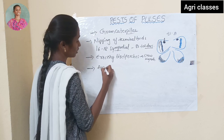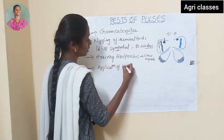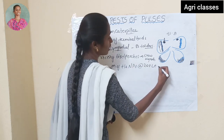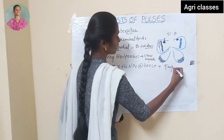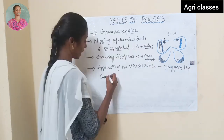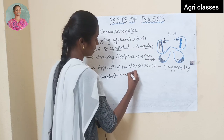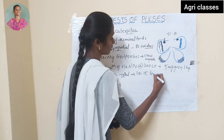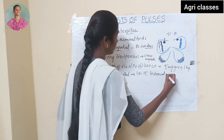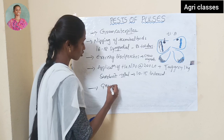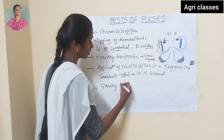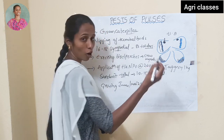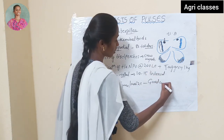Application of HaNPV at the rate of 200 larval equivalents with jaggery 1 kg, teepol 100 ml, at 10 to 15 days interval. Then growing of maize crop or bajra or jowar around the crop as a guard crop — 4 rows.